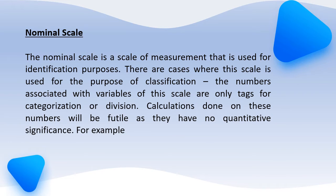The first one is the nominal scale. The nominal scale is a general scale. If you look at it in a general way, you can identify how you can identify yourself — if something is possible, then you can separate it, or you can identify yourself in a different section. So this is the nominal scale.